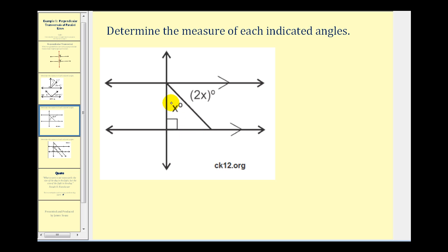Remember that if a line is perpendicular to one parallel line, it's also going to be perpendicular to the other parallel line. So we can go ahead and mark the corresponding angle here as a right angle. When a perpendicular transversal cuts two parallel lines, it forms eight right angles or eight angles that measure 90 degrees. So this angle here would also be a right angle and therefore it would measure 90 degrees.